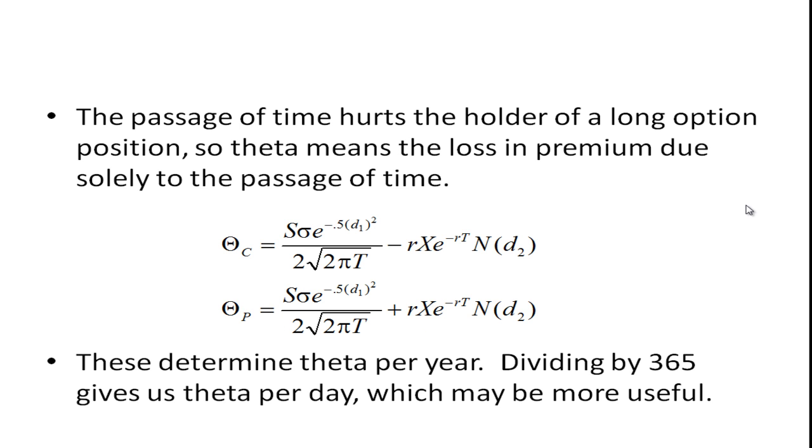Now, the passage of time hurts the holder of a long option position. So theta means the loss in premium due solely to the passage of time. And we would expect that, because as time goes on, that long position you have that allows you to buy if it's a call option or sell if it's a put option, the less time you have to use it, the less valuable it is.